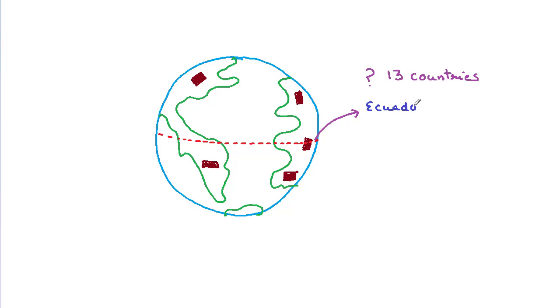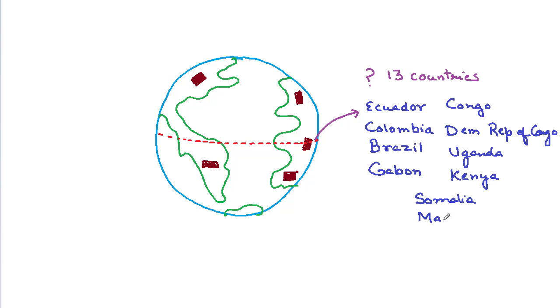It might seem that we can get this land anywhere on earth, especially the most expensive place. But we have forgotten about the constraints. In fact, we can get this land only in 13 countries because equator passes through these countries only.